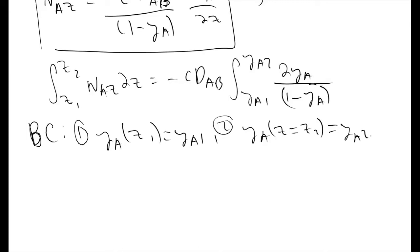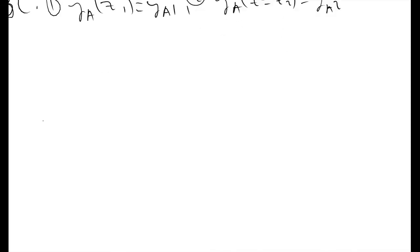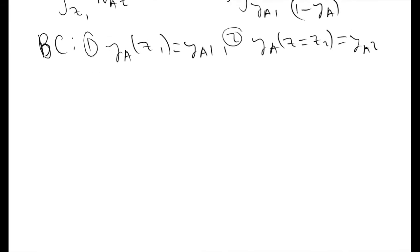Plugging this in and evaluating this integral, what we end up with is NAZ, the flux of A in your Z direction, is equal to the total concentration times the diffusion constant of A into B divided by Z2 minus Z1, the height of the liquid in your Arnold cell, and then times the natural log of 1 minus YA2 divided by 1 minus YA1.